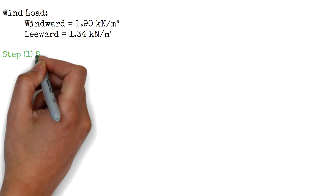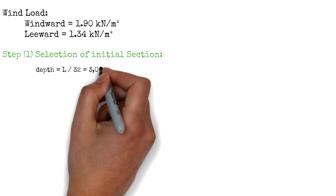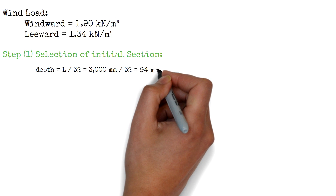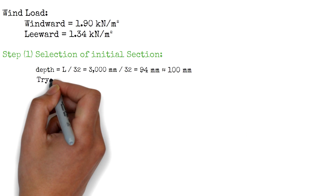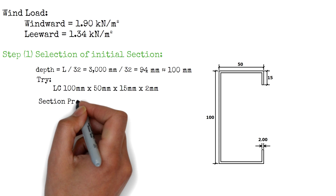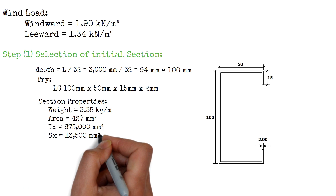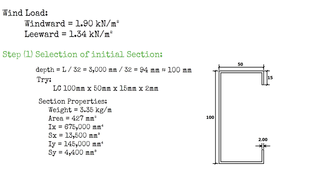Since we have all the parameters and data we need, we will now begin with the design. The first step is to assume an initial section. The rule of thumb says that the depth of the purlin may be taken from the length of the purlin, which equals 3 meters, divided by 32, giving us 94 millimeters. For this design we will try 100 millimeters as the initial depth of the steel purlin. We will try LC 100mm × 50mm × 15mm × 2mm with section properties as follows: weight equals 3.35 kg/m, area equals 427 mm², moment of inertia along X equals 675,000 mm⁴, section modulus along X equals 13,500 mm³, moment of inertia along Y equals 145,000 mm⁴, section modulus along Y equals 4,400 mm³. These properties can be found in the CEP steel sections.